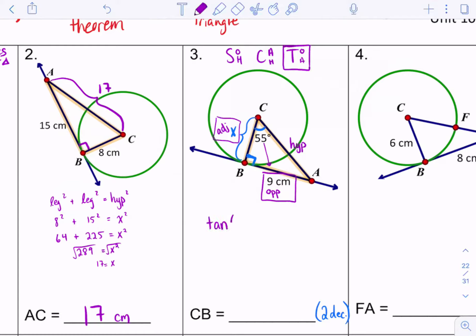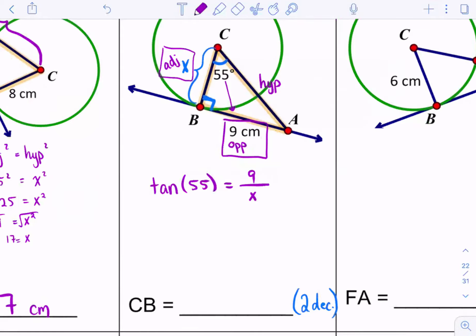So we have an adjacent. We have an opposite. Sohcahtoa, look at your letters up there and be reminded that the T is tan. The tan of the angle that we're at equals the opposite, which is nine, over the adjacent. And let's set ourselves up to cross multiply here by placing the tan 55 over a one. Just a quick reminder, when we're doing Sohcahtoa, and I use sine, cosine, or tangent in my calculator, what mode do I always have to be in? I have to be in degree mode. So make sure your calculators are in degree mode before you do any math here.